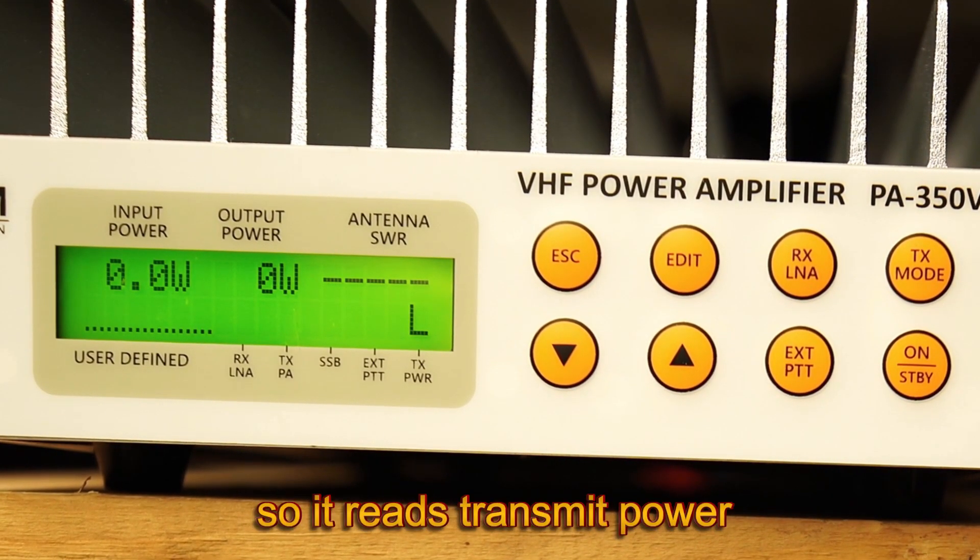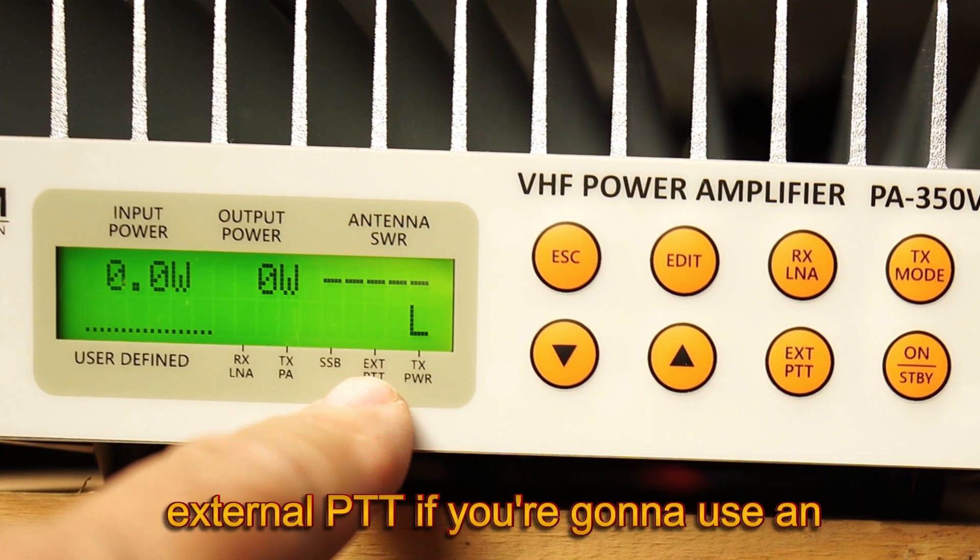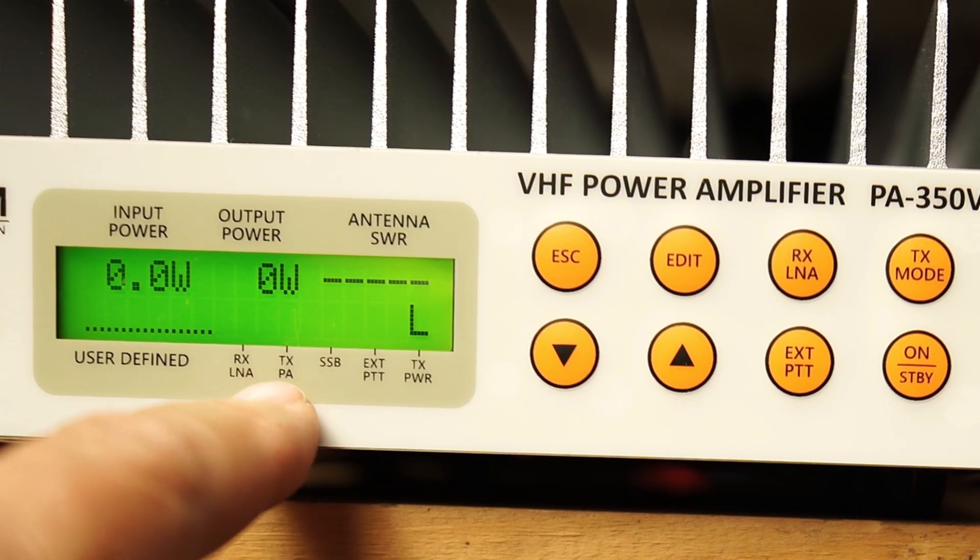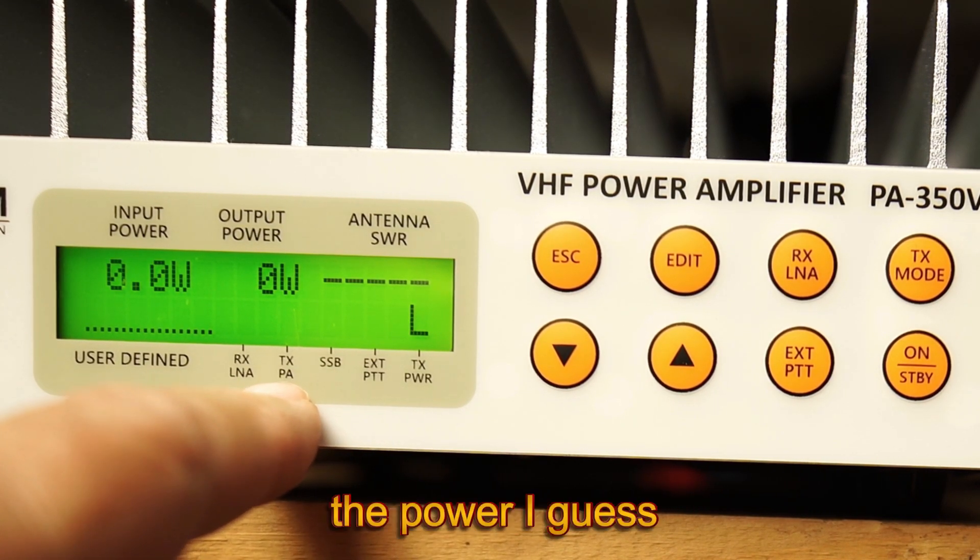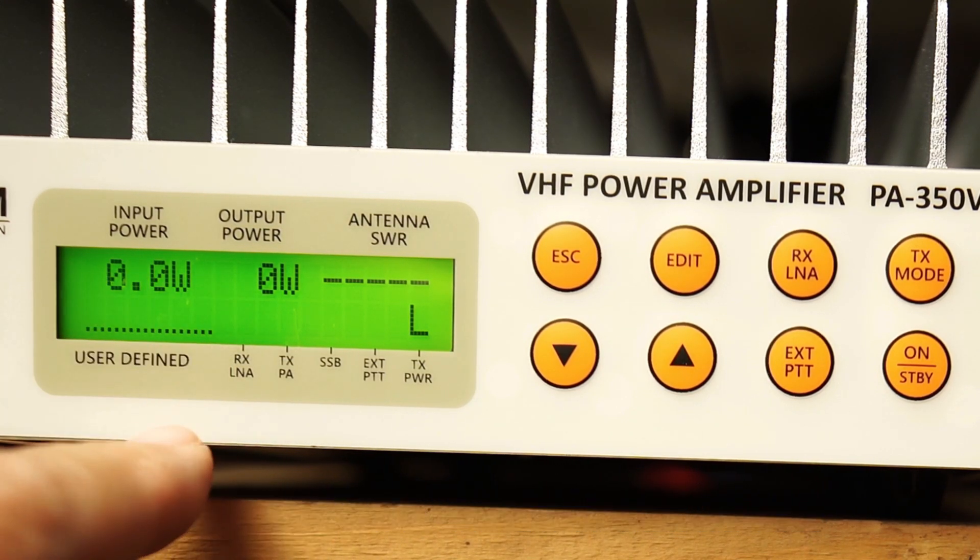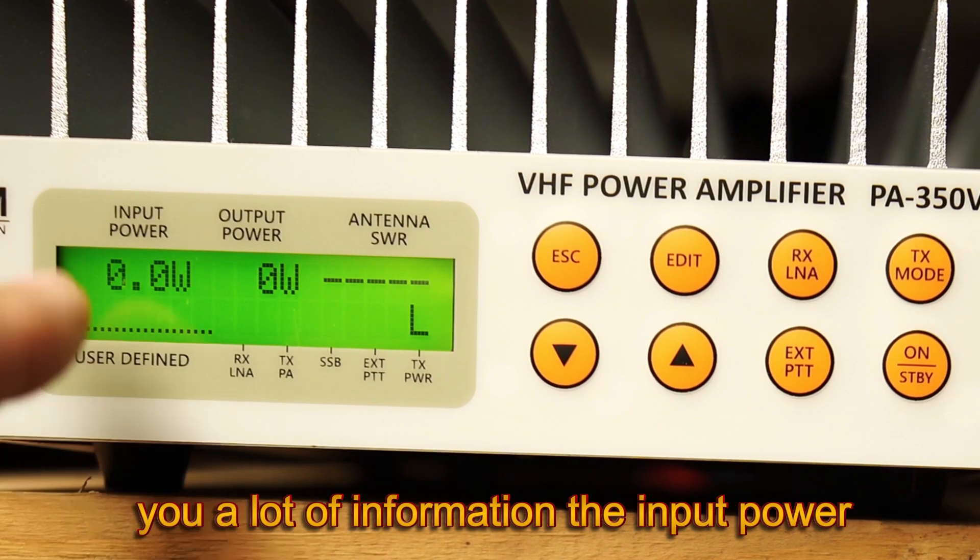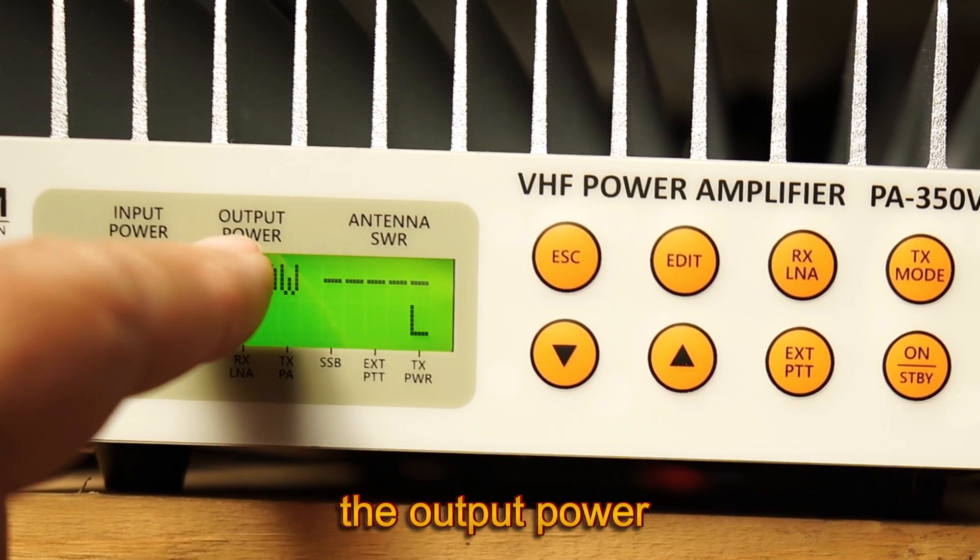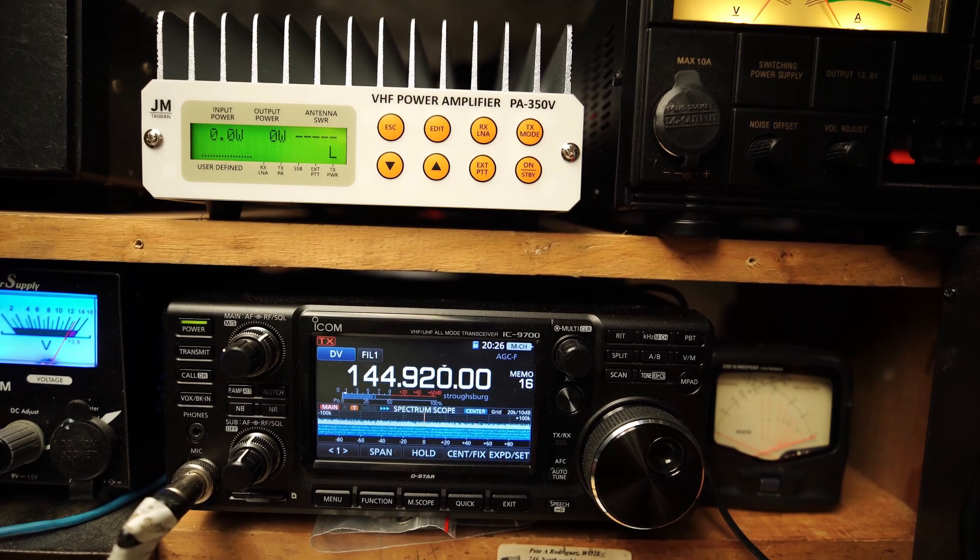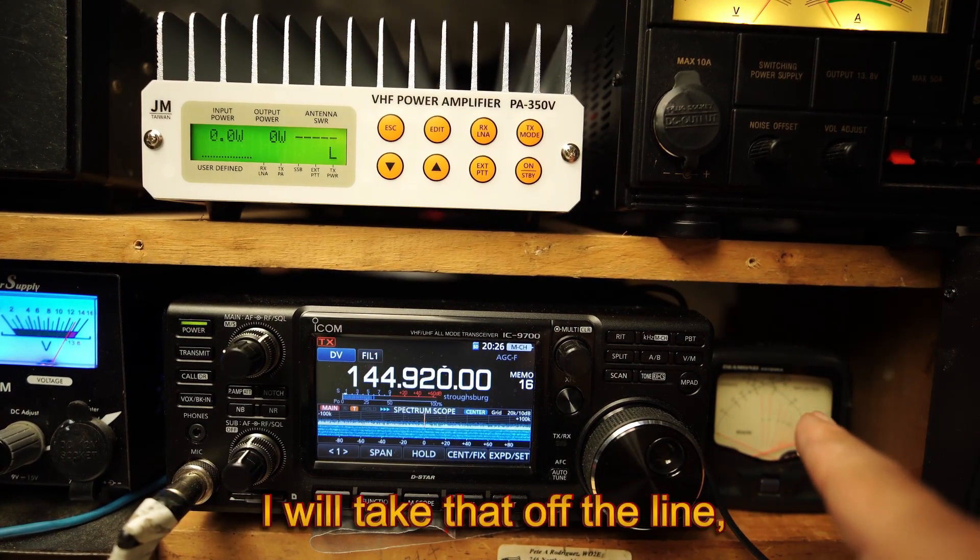Firmware. So it reads transmit power, external PTT if you're going to use an external PTT device, sideband, transmit power I guess, receive LNA whatever that means. Fan speed. So yeah, the meter tells you a lot of information, the input power, the output power, the SWR rating. So basically I don't need this meter, I can take that off the line.